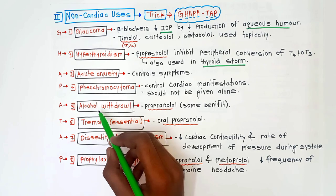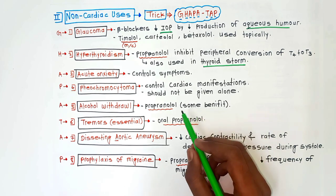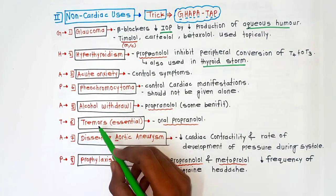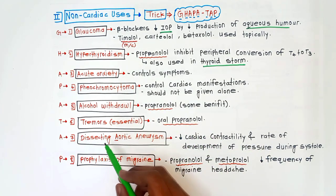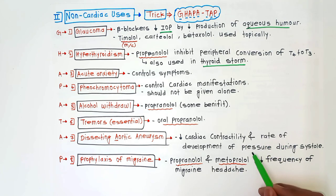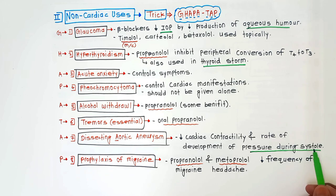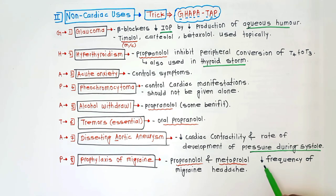For alcohol withdrawal syndrome, propranolol is used and gives some benefit. For essential tremors, oral propranolol is used. For dissecting aortic aneurysm, beta blockers are used to decrease cardiac contractility and the rate of development of pressure during systole. For prophylaxis of migraine, propranolol and metoprolol are used, and they decrease the frequency of migraine headaches.